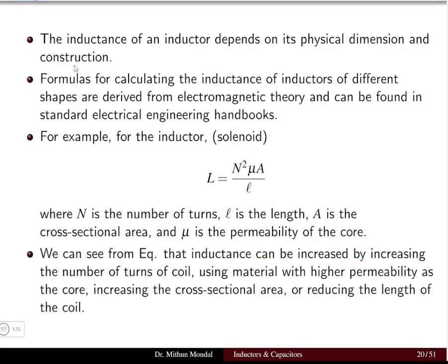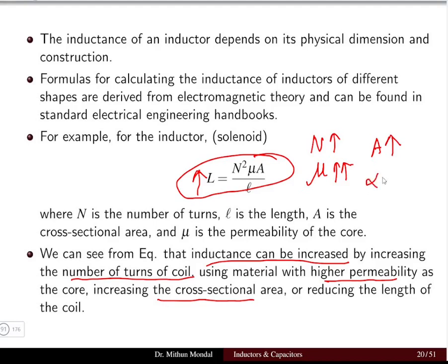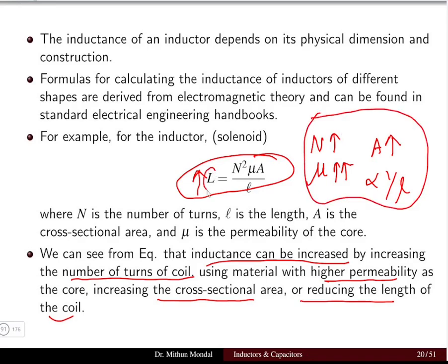From this equation, inductance can be increased by increasing the number of turns N, using a higher permeability material, or increasing the cross-sectional area of the core. Inductance is inversely proportional to the length, so reducing the length of the coil will increase inductance.